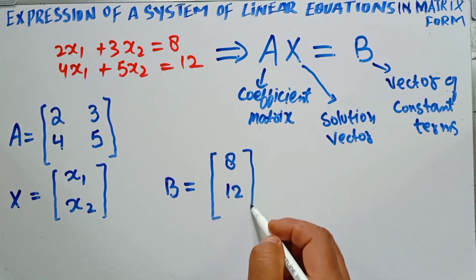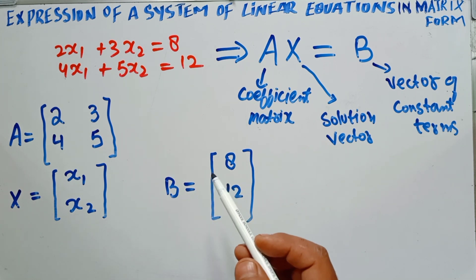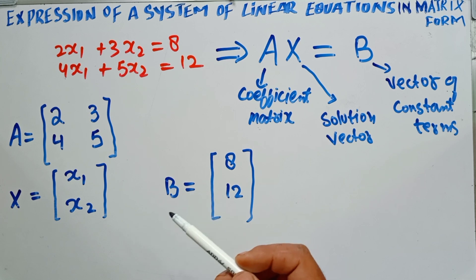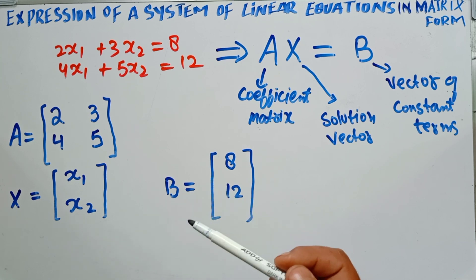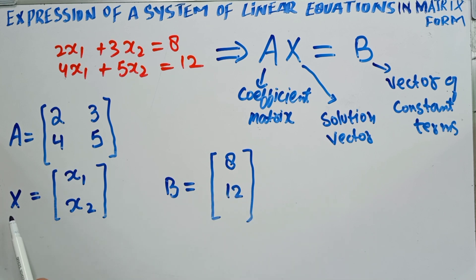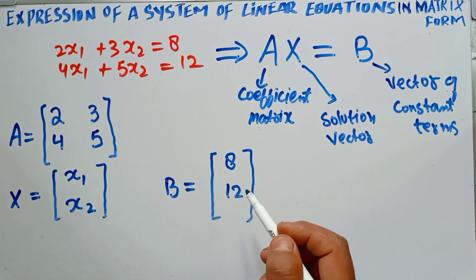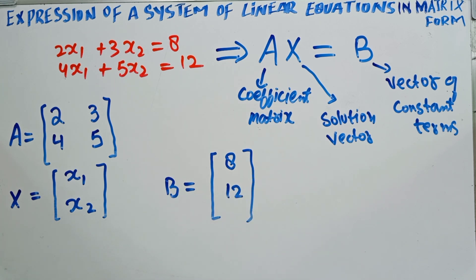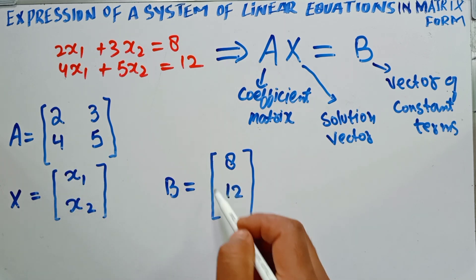This is how we can express a system of linear equations in matrix form. One thing to be remembered: X and B will always be column vectors — these are always column vectors.